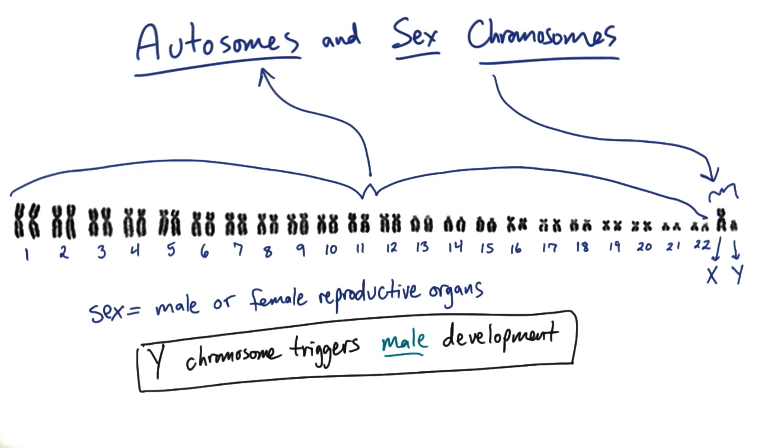The key point here is that the Y chromosome triggers male development. So if you have a Y chromosome, you're most likely going to develop as a male. Without a Y chromosome, ultimately the individual will develop as a female.